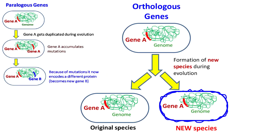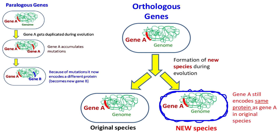Orthologous genes. During evolution, a species may be completely transformed into a new species. This usually occurs because of several mutations in the genome. However, in spite of mutations, there will be genes that encode proteins with the same function. Such genes are called orthologous genes.